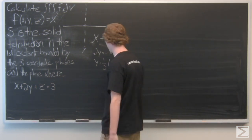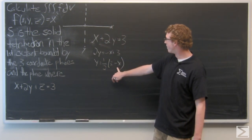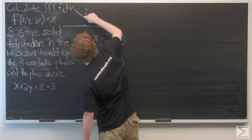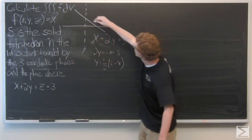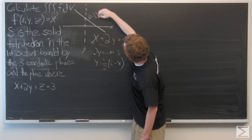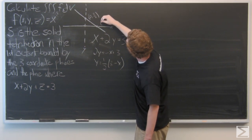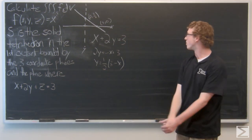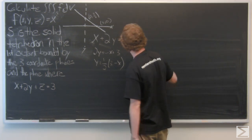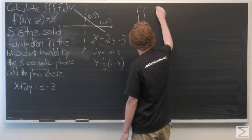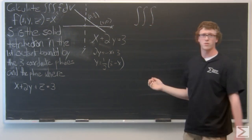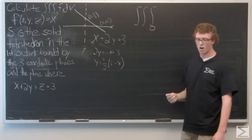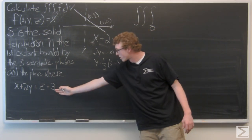We have our function of y as one-half times the quantity three minus x. Graphing that, our y-intercept is going to be at (0, 3/2) and our x-intercept is going to be at (3, 0). Now that we have our function of y, we need bounds for z. The lower bound for z is the z-plane, so the lower bound is just zero. The upper bound is the entire function as a function of z.